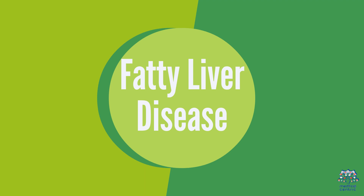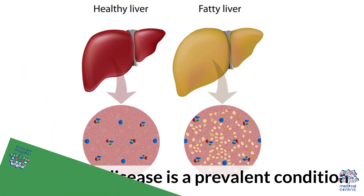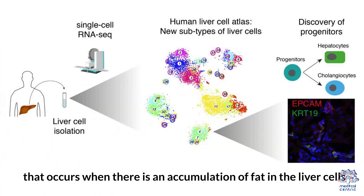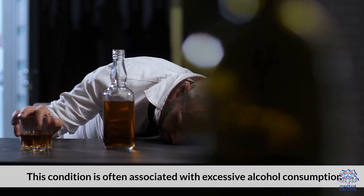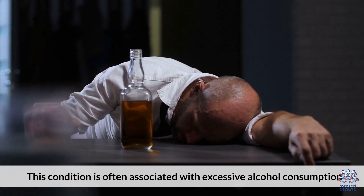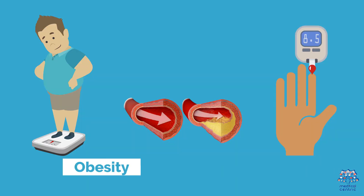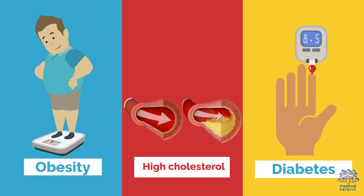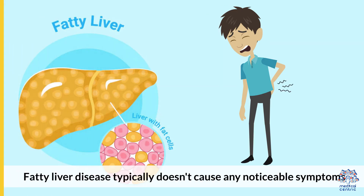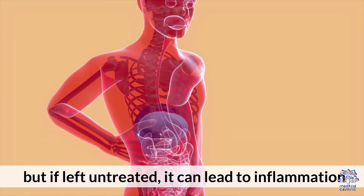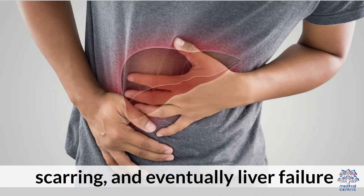Fatty liver disease is a prevalent condition that occurs when there is an accumulation of fat in the liver cells. This condition is often associated with excessive alcohol consumption, obesity, high cholesterol, and diabetes. Fatty liver disease typically doesn't cause any noticeable symptoms, but if left untreated, it can lead to inflammation, scarring, and eventually liver failure.